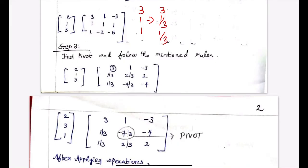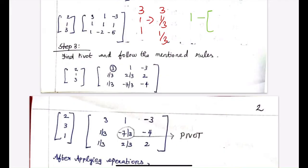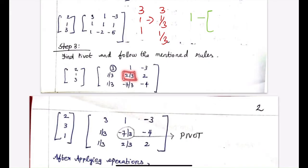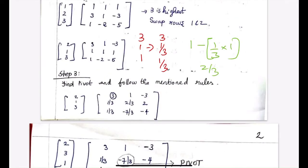Then secondly, certain elements get converted. To find the new value for a position, we take the old element — which is 1 — subtracted by the product of the element after dividing by the pivot and the corresponding element. So 1/3 into 1, giving us 1 minus 1/3, which equals 2/3. So we've got this value.